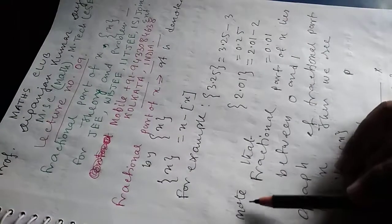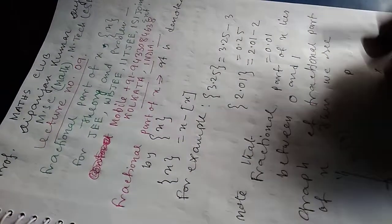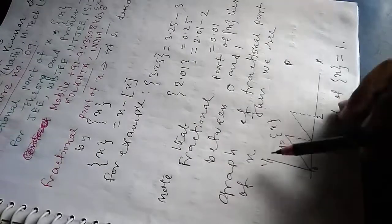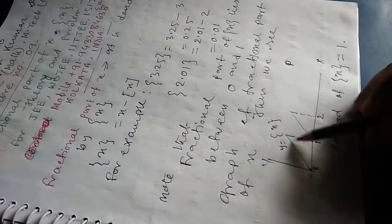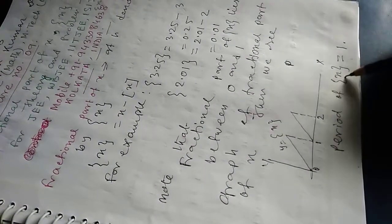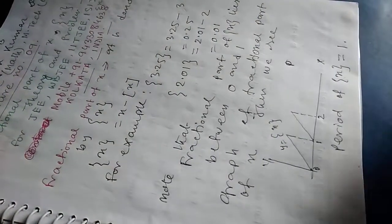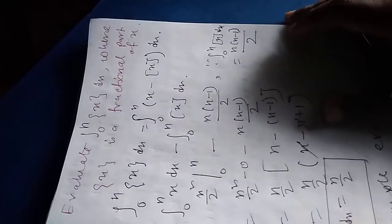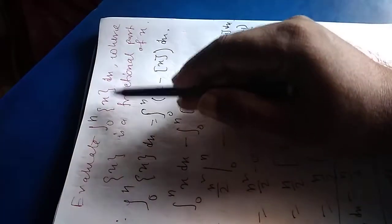Thus we see that the fractional part of X lies between 0 and 1. Note that fractional part of X lies between 0 and 1. Looking at the graph of fractional part of X, the period of fractional part of X is equal to 1. Now I will explain how to find the definite integral from 0 to N of fractional part of X. This sum is taken from a competitive exam paper and is very important.